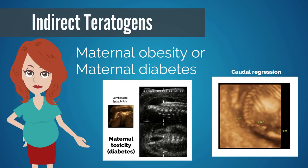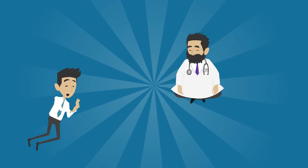Indirect teratogens usually result from toxic antibodies or metabolites from the mother that are transported across the placenta to the fetus. The most well described is poorly controlled diabetes — these embryos are exposed to elevated maternal blood sugar levels and have increased risk of cardiac anomalies, spina bifida, renal anomalies, and caudal regression anomalies.